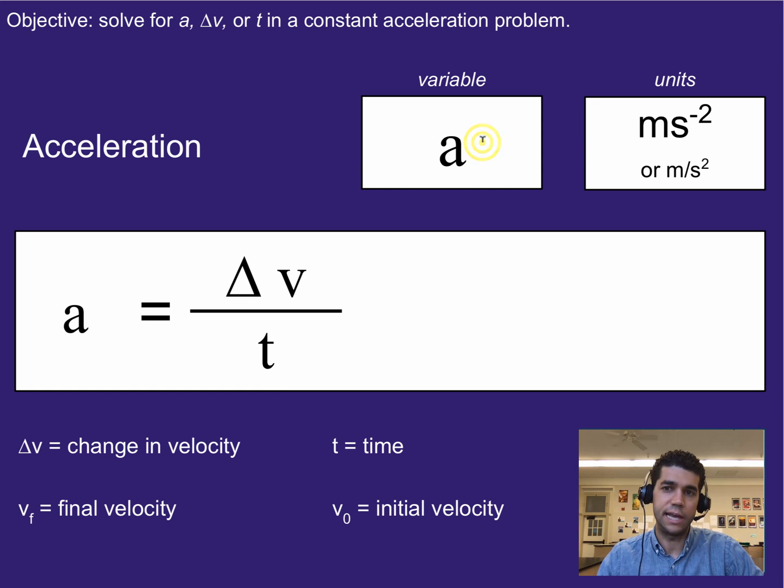Now the variable for acceleration is a, and the units for it are meters per second squared. That can be written this way or this way. We are most commonly going to write it with the exponent notation. Another way to say this unit is meters per second per second. So that's meters per second per second, or meters per second squared.